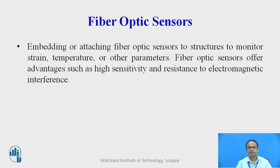Fiber optic sensors. Embedding or attaching fiber optic sensors to structures to monitor strain, temperature or other parameters. Fiber optic sensors offer advantages such as high sensitivity and resistance to electromagnetic interference. These are important sensors used for monitoring not only strain or deformations but also the thermal effect of a particular structure during winter, summer or any season.